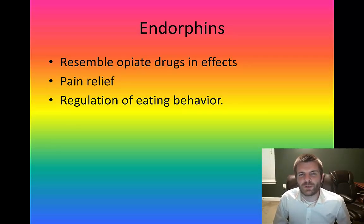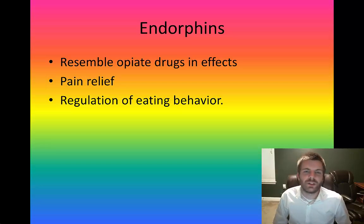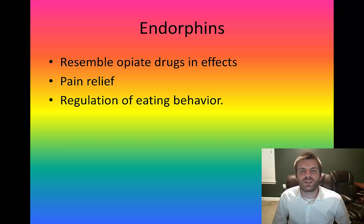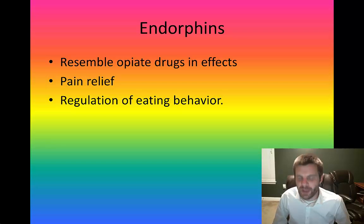Another neurotransmitter we don't often think about is endorphins. Endorphins are released to resemble opiate drugs and their effects in the body, specifically for pain relief. They are also linked with the regulation of eating behavior.